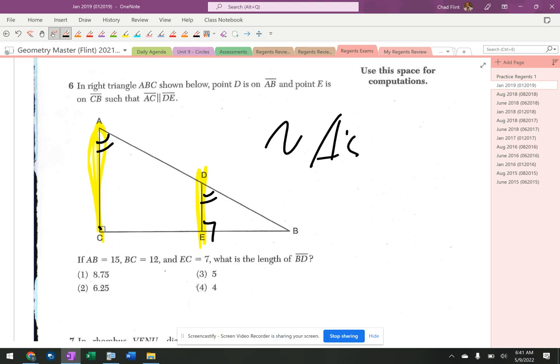Whenever I have similar triangles, I know I have proportional sides, so I can set proportions up. Let's see what it tells me about the sides themselves here. So it says AB is 15, that's from there to there. It says BC is 12, that's from there to there. And it says EC is 7, that's from there to there.